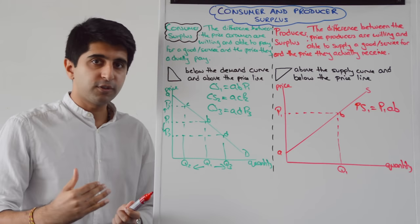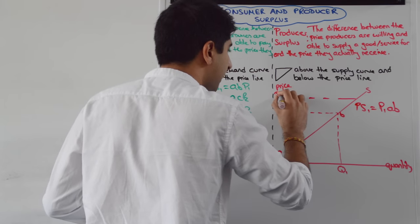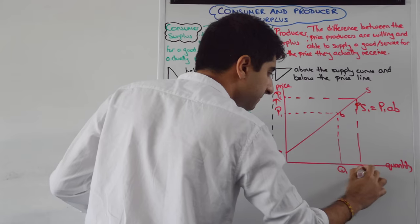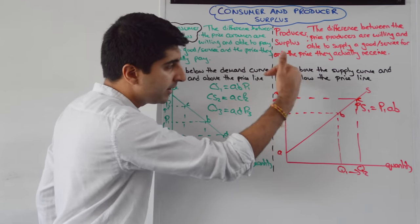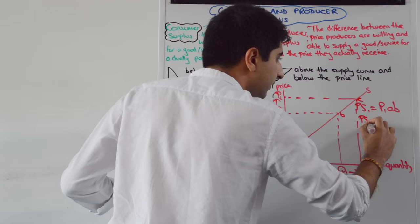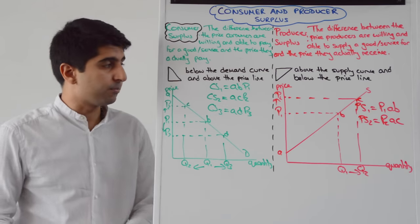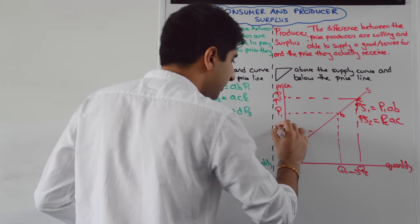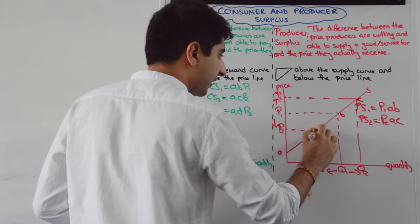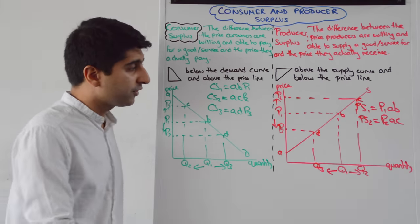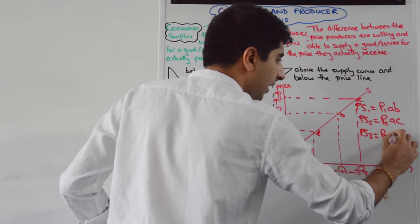If we raise the price to P2, we have a quantity of Q2. Producer surplus has increased — the area above the supply curve beneath the price line is now P2, A, C. Whereas if we drop the price to P3, quantity becomes Q3, and producer surplus falls — it's now equivalent to P3, A, D.